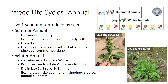Large crabgrass, giant foxtail, smooth pigweed, common lamb's quarters, common ragweed, velvet leaf, and common purslane are examples of troublesome summer annuals. Winter annuals germinate in late summer or fall, mature, produce seed, and then die the following spring or summer. Examples of winter annuals include common chickweed, henbit, shepherd's purse, downy brome, and annual bluegrass.